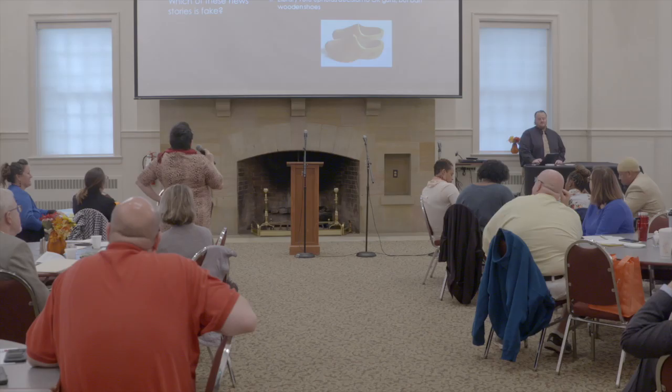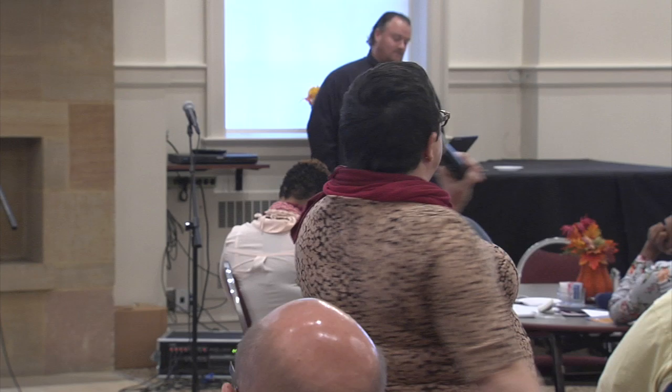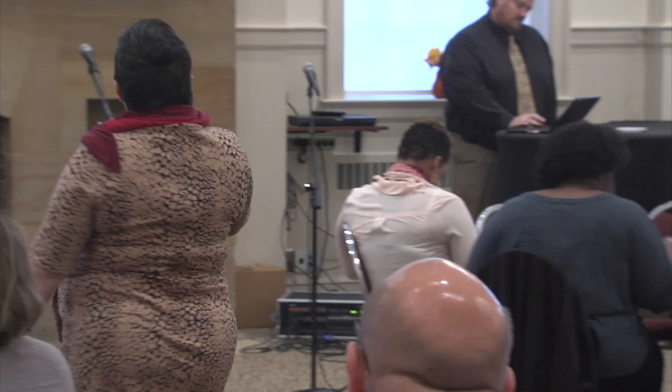This is another good one. We're looking for the fake news story. One: 'Christian baker, screwed by liberal court, wins the lottery.' Two: 'Pumpkin spice air freshener prompts evacuation of Maryland school — the fire department and a hazardous materials team were called.' Three: 'Montana man elected to a job he didn't run for.' And four: 'Library vote upholds decision to okay guns, but ban wooden shoes.' Which of those stories is fake, and how can you tell? Look at the words that the author used as a hint.